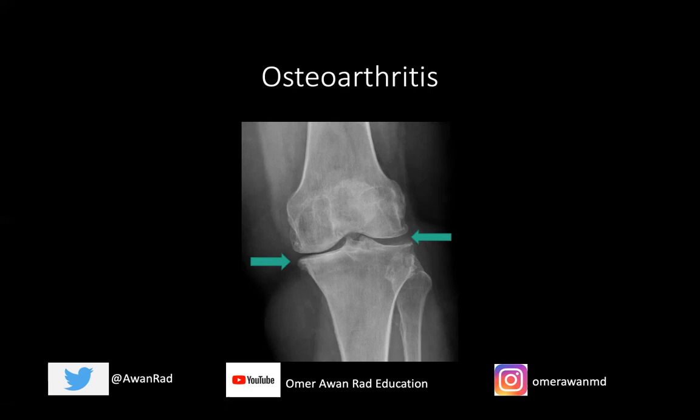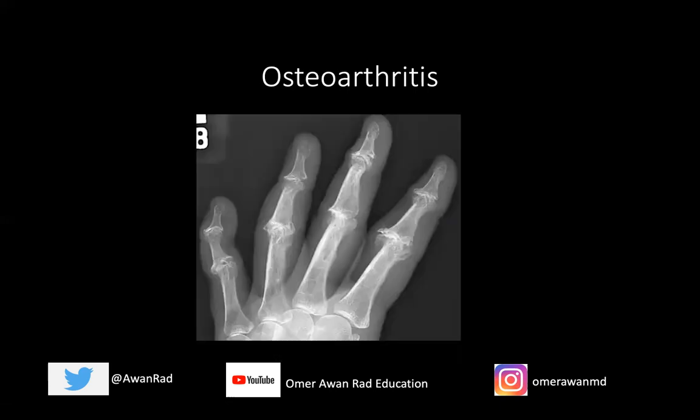Bone proliferation or production of more bone is a hallmark finding of degenerative arthritis. That's the opposite of inflammatory arthritis, where you get loss of bone in the form of erosions. So when you lose bone, that's an inflammatory process in the form of erosions. When you gain bone in the form of osteophytes, that's a degenerative arthritis — which we're seeing here in the case of osteoarthritis.